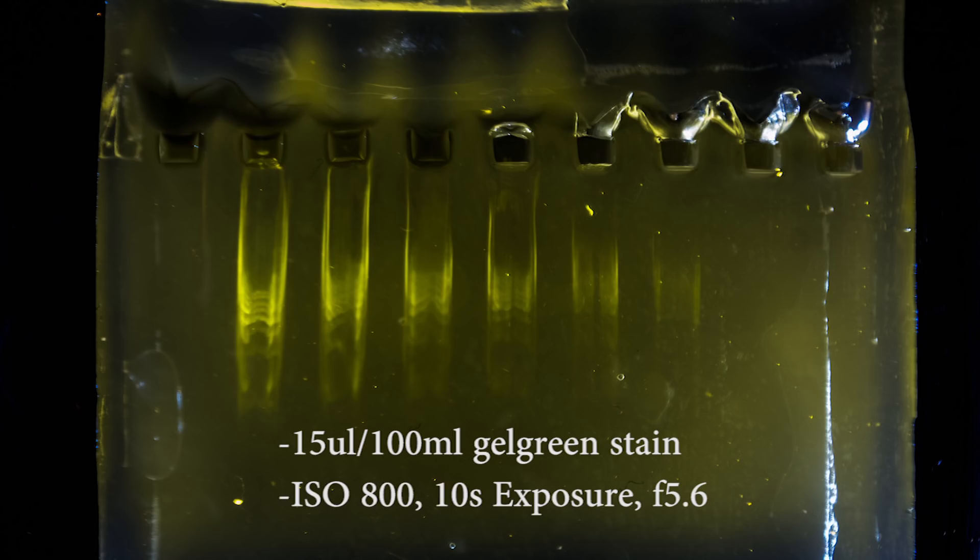So far, the best settings for all of this I've found are 15 microliters worth of gel green stain per 100 milliliters of gel, an ISO of 800, an exposure of 10 seconds at f5.6. I think I'd decrease the gel stain by a microliter, and this would be perfect.